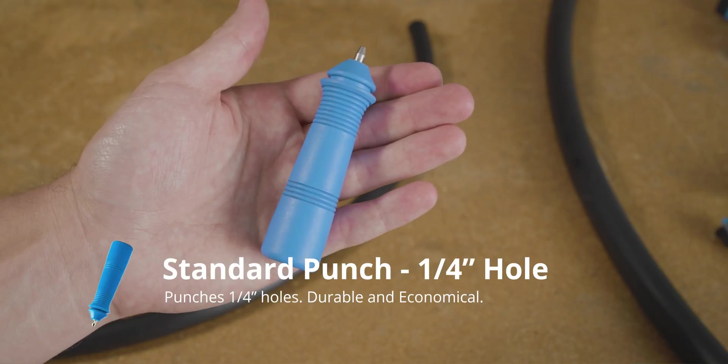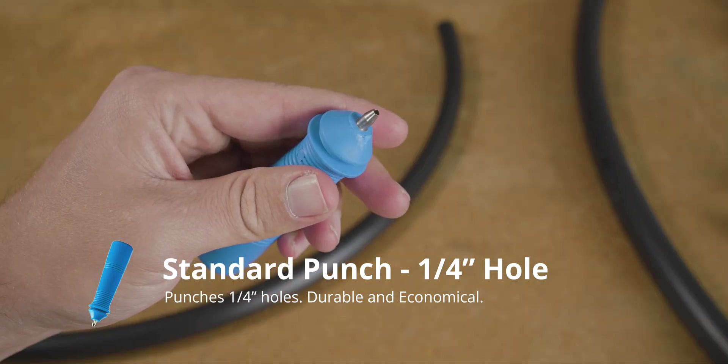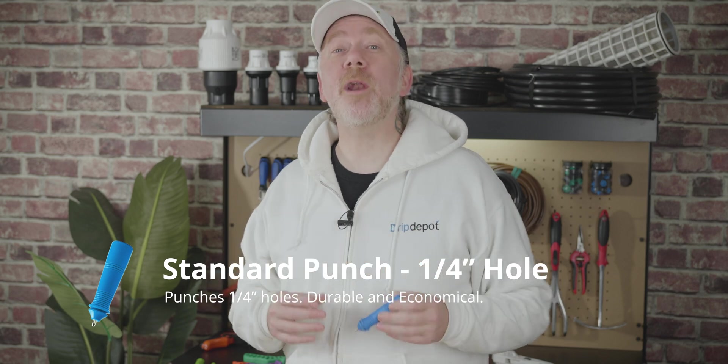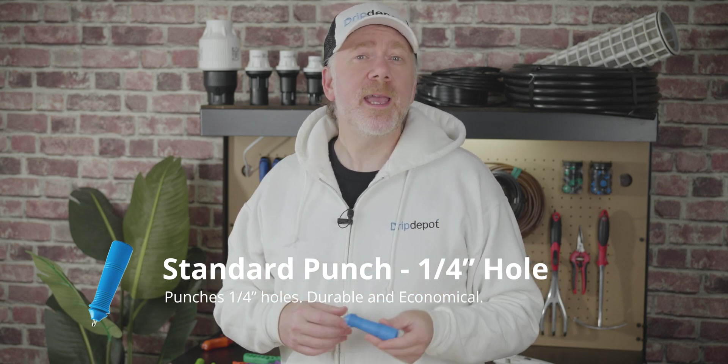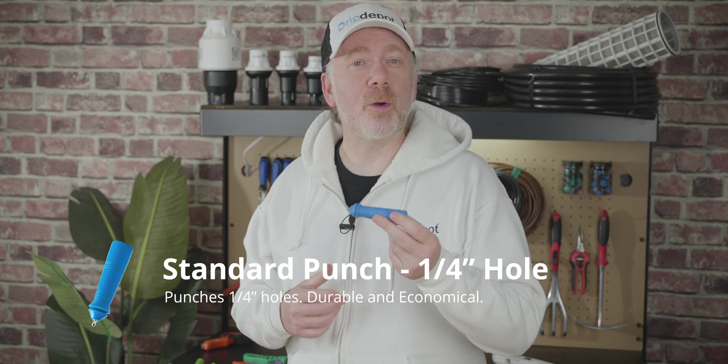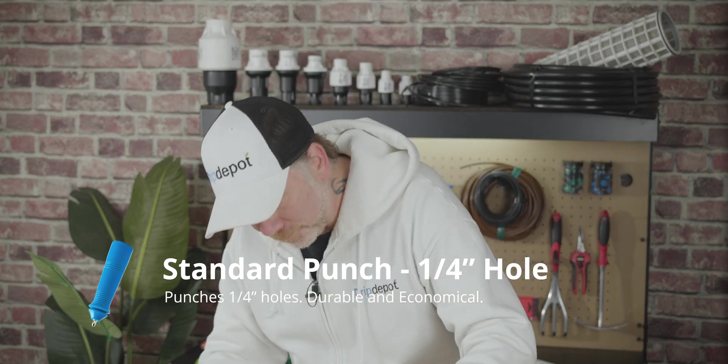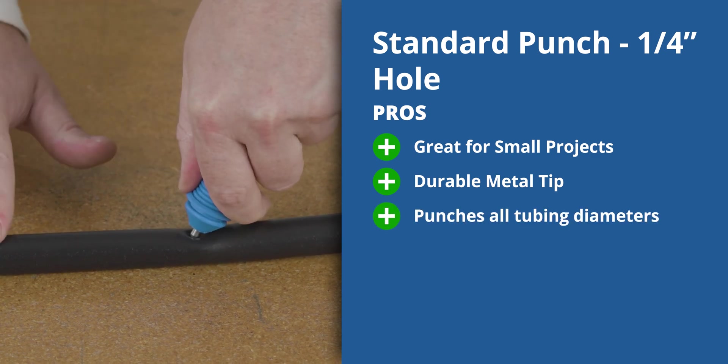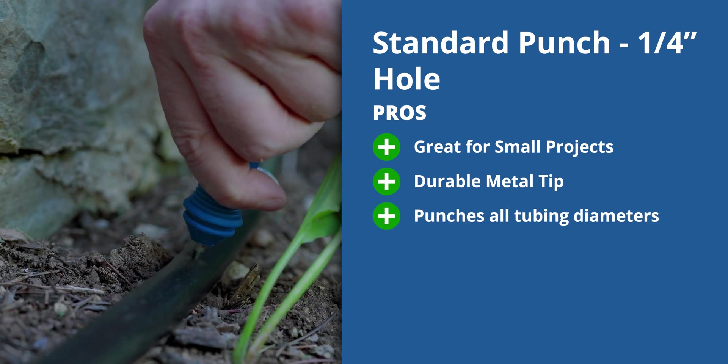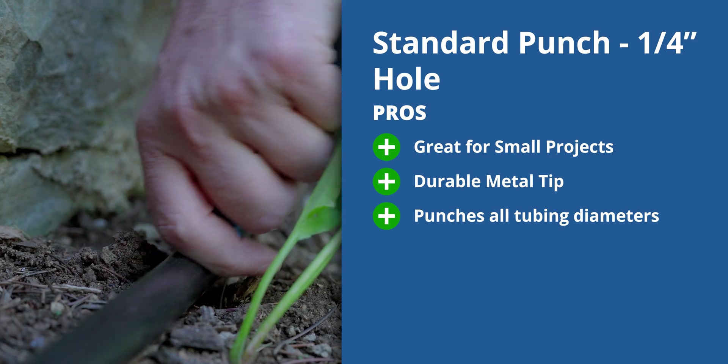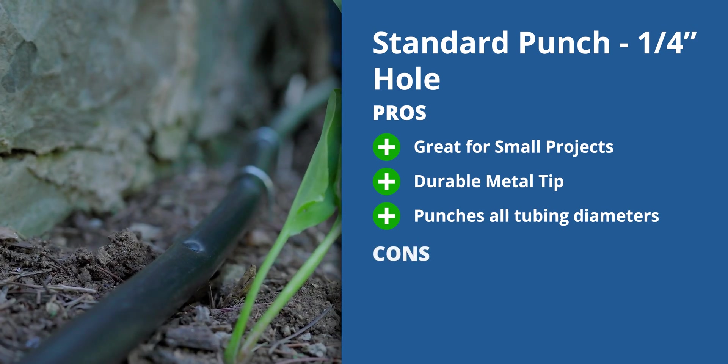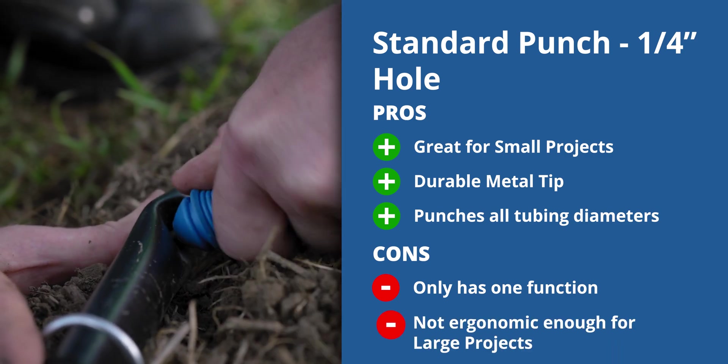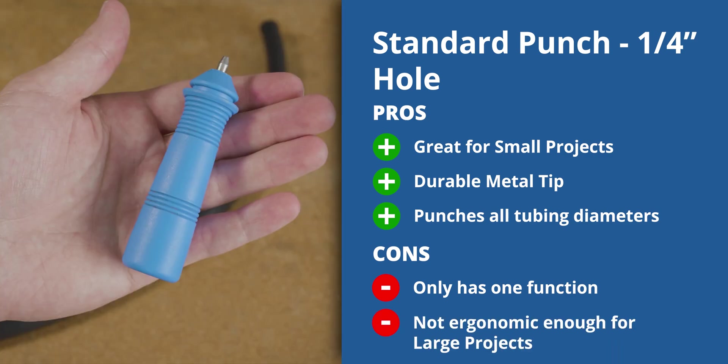This inexpensive punch is perfect for a smaller system that won't need too many punched holes. Our standard one-quarter inch punch, one of our least expensive punches, can punch one-half inch and larger poly tubing. It's a great choice for smaller systems where you don't have to punch a lot of holes. This punch is affordable, pocketable, and durable. Its design allows you to punch holes in awkward and tight spaces. The metal punch tip will last longer than you see on plastic tipped punches, and it can punch all the way up to one inch poly tubing, although it is only a single function punch. You'll need either scissors or a cutter to complete an install, and some people prefer a more ergonomic punch.